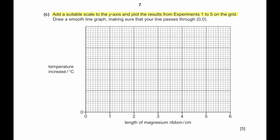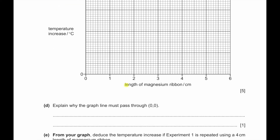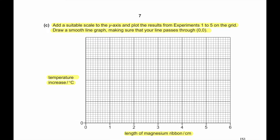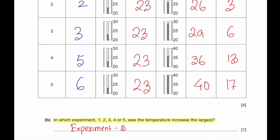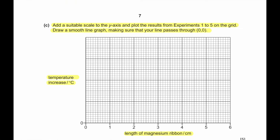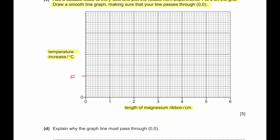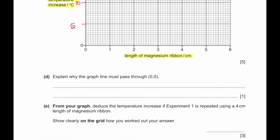Part C: Add a suitable scale to the y-axis and plot results from experiments 1 to 5 on the grid, drawing a smooth line graph passing through (0,0). The maximum temperature rise is 17°C and minimum is 1°C, so we can scale the y-axis with markings at 5, 10, 15, and 20. Part D: Explain why the graph line must pass through (0,0) — if zero magnesium is used, there is no reaction, so there is no temperature increase.